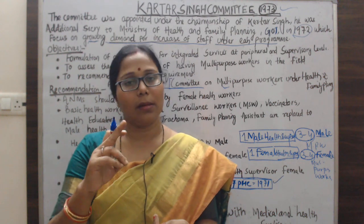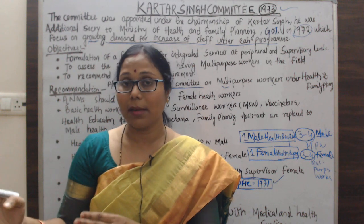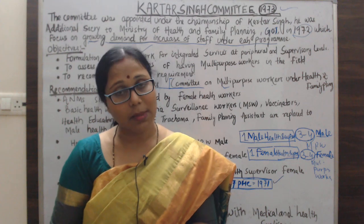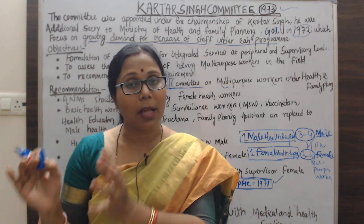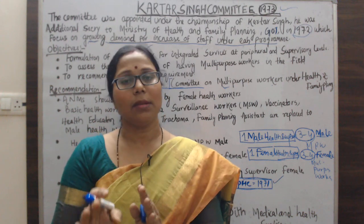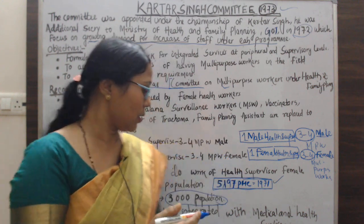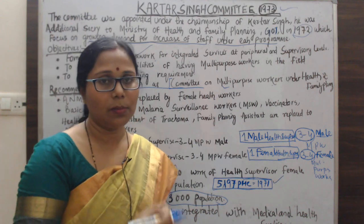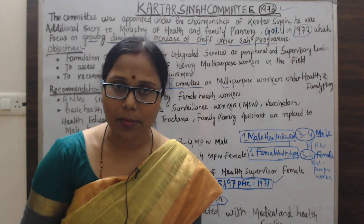Three to four male multi-purpose workers are supervised by one male health supervisor. According to the 1971 census, 5,197 PHCs were established. One PHC should cover a population of 50,000, with 16 sub-centers per PHC, giving approximately 3,000 population per sub-center. These are the key points about the Kartar Singh Committee.